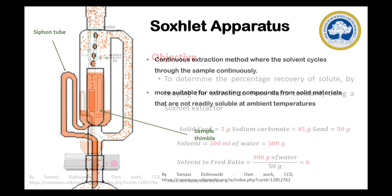In this particular experiment, at a constant solvent to feed ratio, we will calculate the percentage recovery of solute in the Soxhlet apparatus. To perform this experiment, 5 grams of sodium carbonate and 45 grams of sand mixed together are taken in a filter paper.